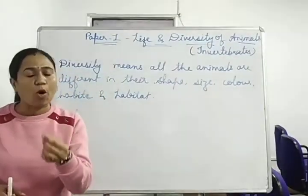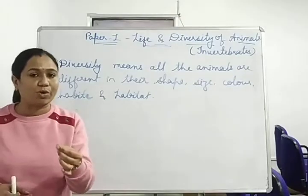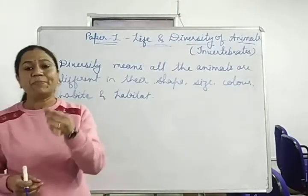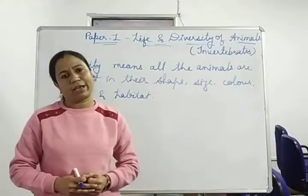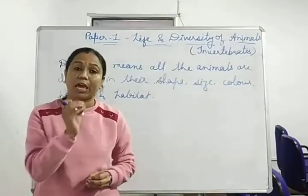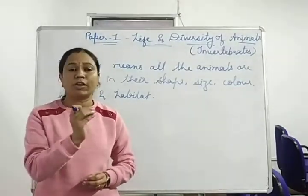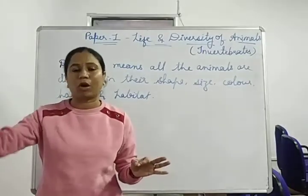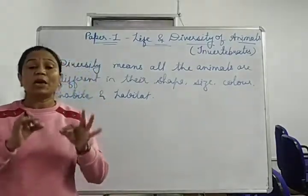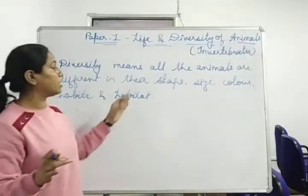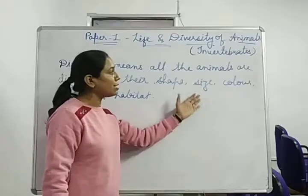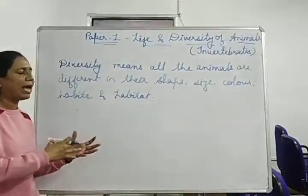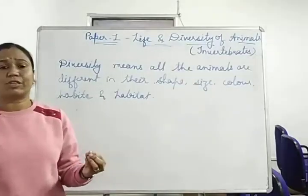In this way we talk about the size. If I talk about size, there are very small levels. For example, protozoa which is a single-cellular animal, that means a unicellular animal. This protozoa is a small animal. If I talk about blue whale, it is a big size. The shape is different, the size is different, the colors are different. There are some black, some bright colors.